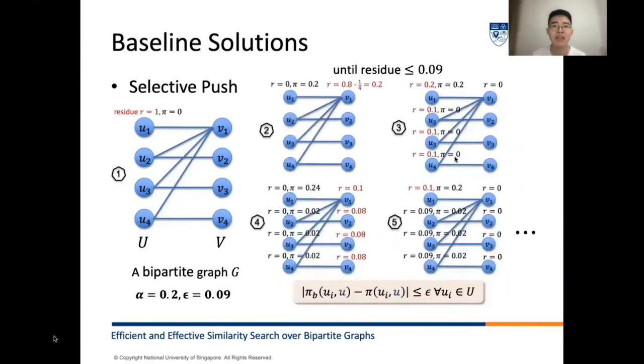The third solution is a selective approach, different from the Monte Carlo and power iteration approaches. It can compute the epsilon-approximate HPP of source node u with respect to every node in the node set U.